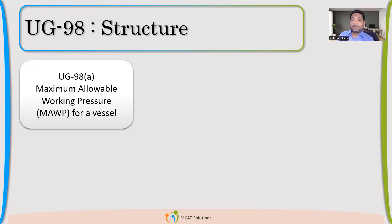What is the difference? What is the MAWP of a component? How can we derive it?